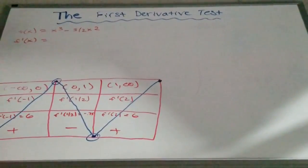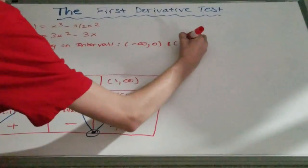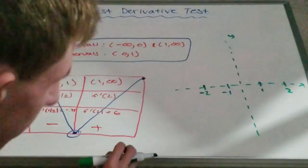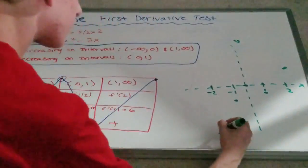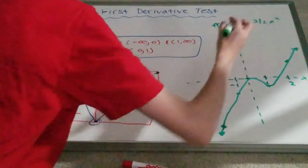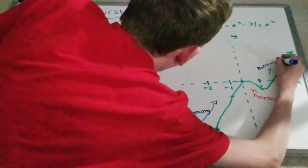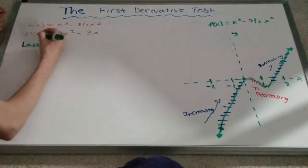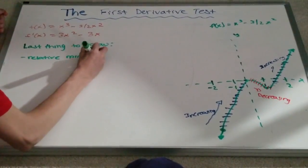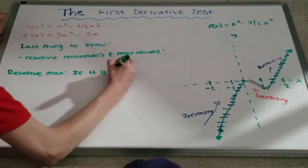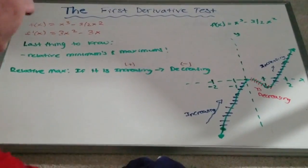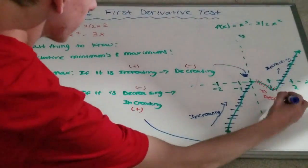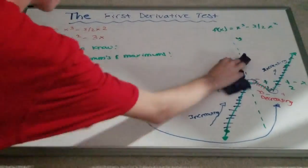So now we know that the original function is increasing on the intervals negative infinity to zero and one to infinity, and decreasing from zero to one. We can also show this by graphing the derivative of the function. We can find relative minimums and relative maximums: a relative maximum occurs where the derivative goes from positive to negative, and a relative minimum occurs where the derivative goes from negative to positive. So the critical point zero is a relative maximum, and the critical point one is a relative minimum.